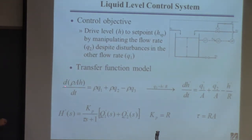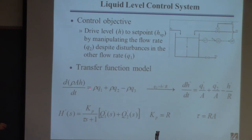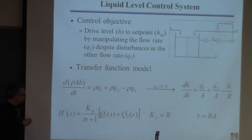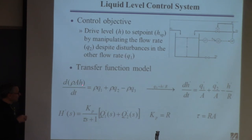We do an overall mass balance on the tank. The accumulation term is the derivative of the mass of fluid — volume times density. This equals the two flows in minus the flow out, on a mass basis. Density is assumed constant so it cancels. Dividing through by area A, the variables in this linear model are H, Q1, and Q2. Q3 does not change with level under these assumptions.